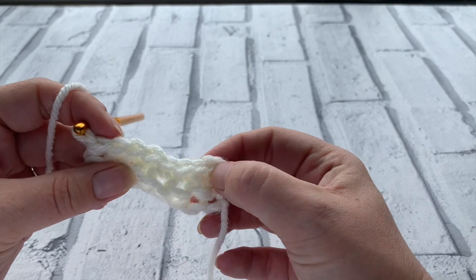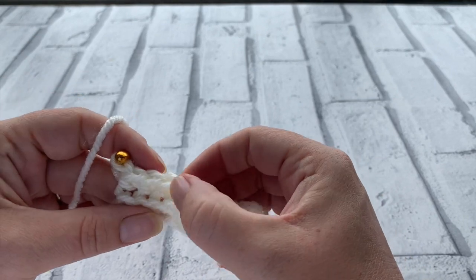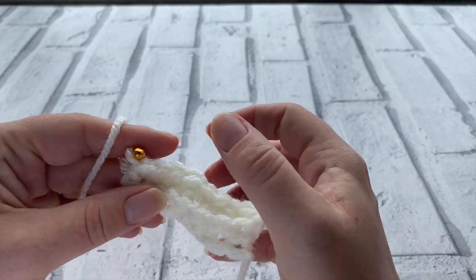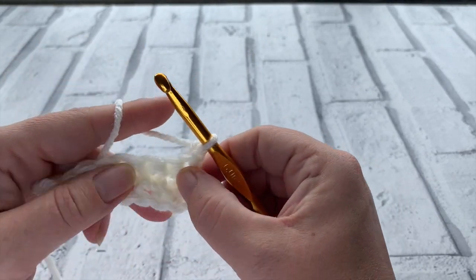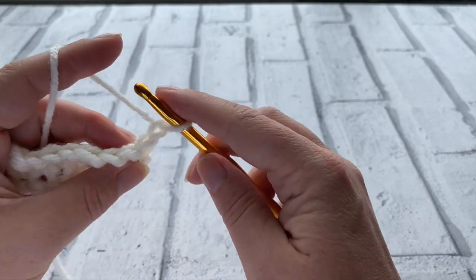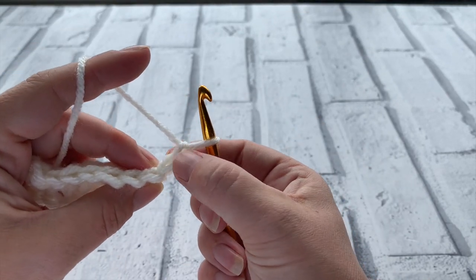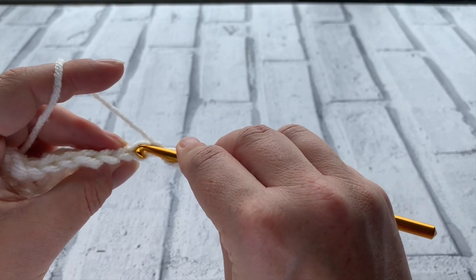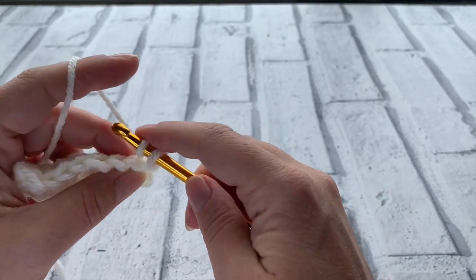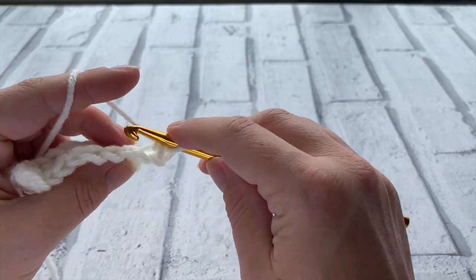Quick count, it's always worth it. We're going to chain one to turn and then once again we're going to keep working into these back loops. So ignoring our chain we're looking for that back loop. So just aim for the middle of the stitch, yarn over, bring that loop up, yarn over, pull through.